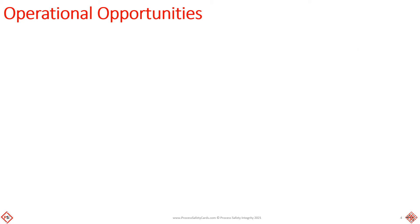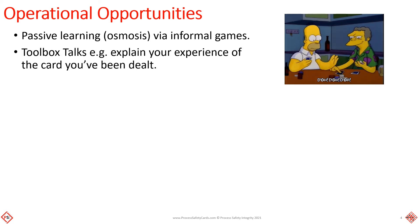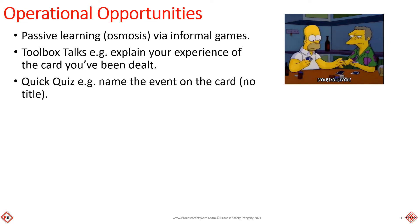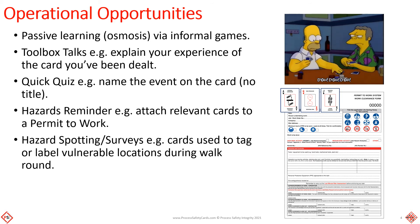Operational opportunities include passive learning via familiar informal games. Toolbox talks — for example, explain your experience of the card you've been dealt. Quick quiz — for example, name the event on the untitled card. Hazard reminder — for example, attach relevant cards to a permit to work. Hazard spotting — for example, cards used to tag vulnerable locations during a walk round.